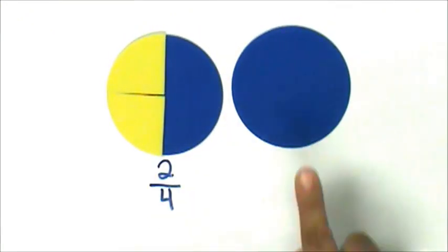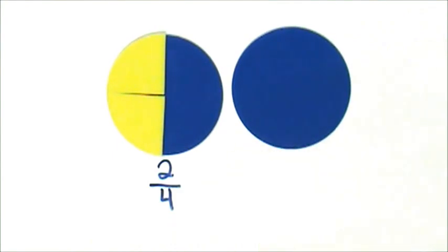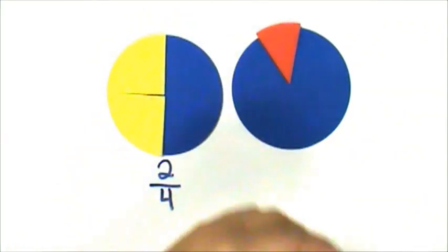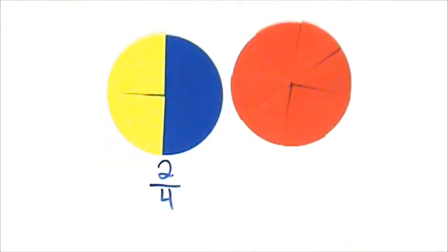Let's partition the second circle, the second whole, into eighths. Let's represent the fraction two-eighths.